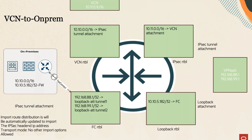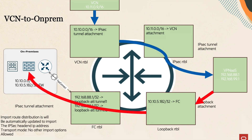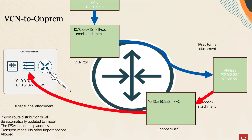Let's take a look at the flow of traffic. In this first example, we will look at traffic flowing from VCN to on-prem. The first route lookup will happen at the DRG VCN attachment. Since the destination is on-prem, this will be reachable over the IPsec tunnel, so traffic will get forwarded to Oracle VPN as a service over an IPsec tunnel attachment. From there, traffic will get encrypted and forwarded to the loopback attachment route table, which will have a route pointing to the on-prem IPsec tunnel endpoint — in this case, 10.10.5.182/32. Traffic will be unencrypted from VCN all the way up to VPN as a service, and once it comes back over the loopback attachment, it will be encrypted, highlighted here in red.